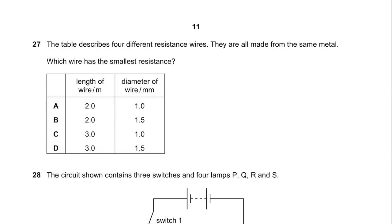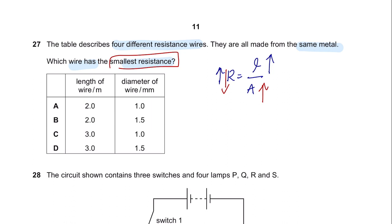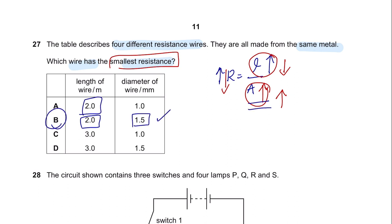Question 27. The table describes four different resistance wires, all made from the same metal. Which wire has the smallest resistance? As length increases, resistance increases. As cross-sectional area increases, resistance decreases. To get the smallest resistance, you need the shortest length and the highest cross-sectional area. The shortest length is 2, and the bigger the diameter, the higher the cross-sectional area. So the answer is B.